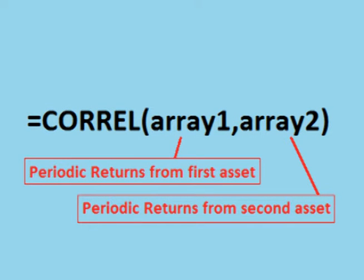To find the correlation of two assets, we can use the correlation function built into Excel. We will download the closing price of two assets, find the periodic daily returns of those assets, use the correlation function to find the correlation coefficient, and graph a scatter plot. For this example, I will use SLV and GLD, the silver and gold ETFs.